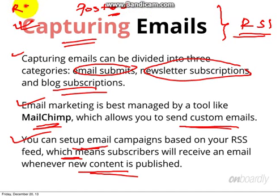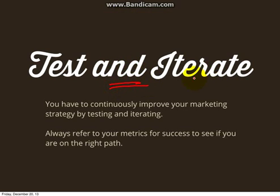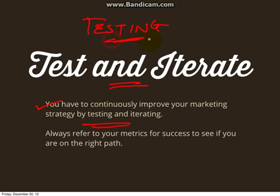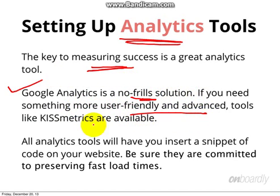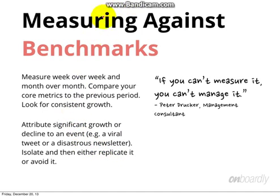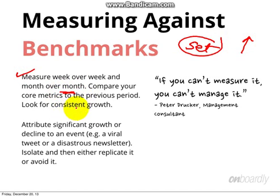Test and iterate — continuously improve your marketing strategy by testing whatever strategy you've tried to see whether it is working, then improve on it. Set up analytic tools like Google Analytics to measure success. Set benchmarks and track growth week-over-week and month-over-month, because if you can't measure it, you can't manage it.